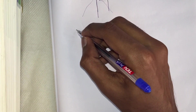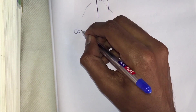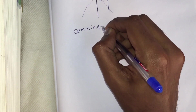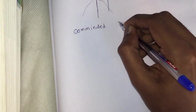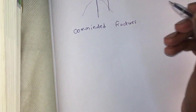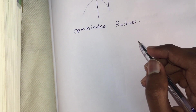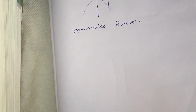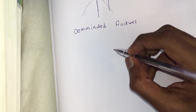The fourth type is comminuted fractures. This occurs due to a crushing or a compression force along the long axis of the bone. This type of fracture has more than two fragments.